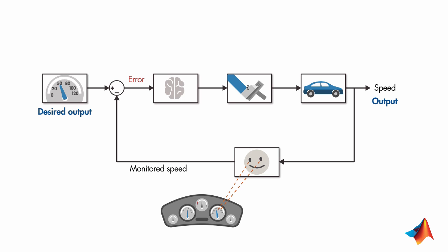The object whose output you try to control is called the plant. The output of the plant is measured by the component called the sensor. And the measured output is then compared to the desired output. The difference between the desired and measured output is the error.